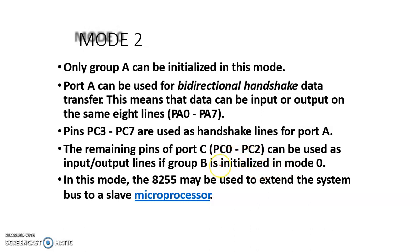In mode 0 operation, Port A is bi-directional. To use Port B in mode 1 or mode 0, use Port C pins PC3 to PC7. In Port A bi-directional mode 2 operation, program Port A and control, and use Port C lower PC0 to PC2.